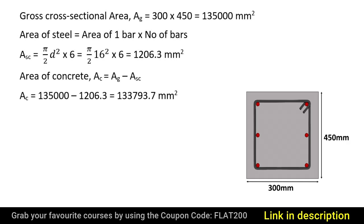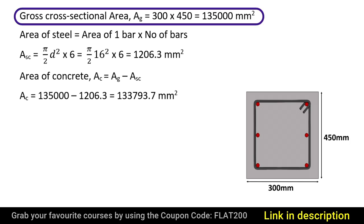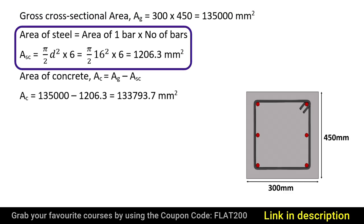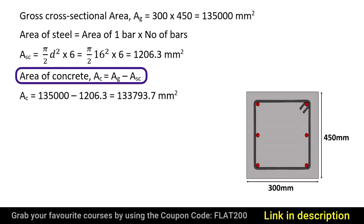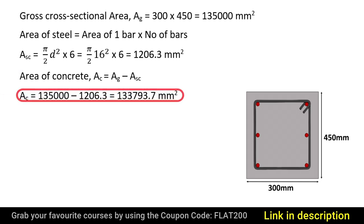The gross cross-sectional area will be equal to width × depth of column, that is 300 × 450 mm, which equals 135,000 mm². The area of steel will be equal to the area of one bar multiplied by the number of bars. The area of one bar is π/4 × D², where D is the diameter of the longitudinal bar, that is 16 mm. On substituting these values, ASC equals 1206.3 mm². The area of concrete equals gross cross-sectional area minus area of steel, giving AC = 135,000 − 1206.3 = 133,793.7 mm².